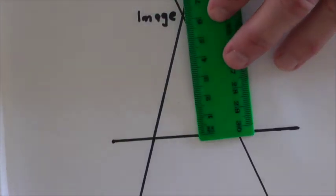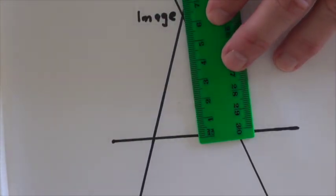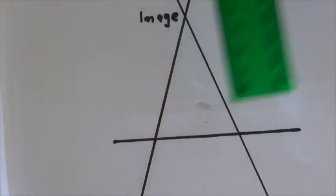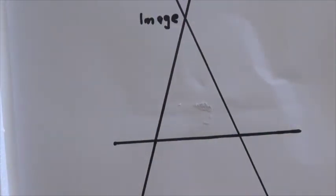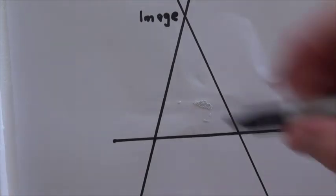Now what I'm going to do is the same thing here, and you can see basically the image is formed six and a half centimeters, so it's equidistant. So it's the same distance behind the mirror as it is in front of the mirror.